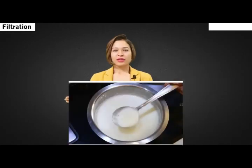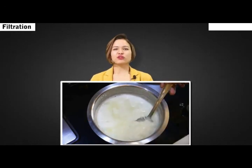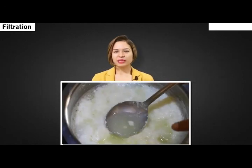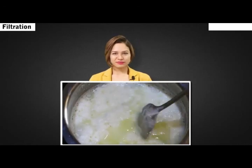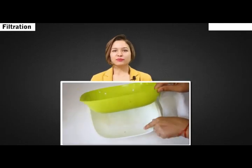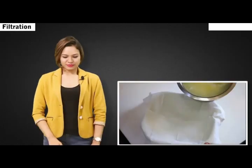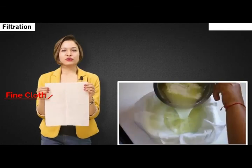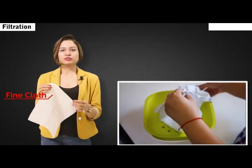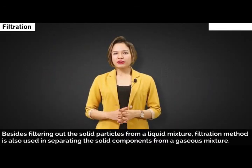The process of filtration is also used for preparing cottage cheese or paneer at home. We add lemon juice to boiling milk, which gives us a mixture of solid particles of paneer and a light yellowish-green liquid. The solid particles of paneer are then separated by filtering the mixture through a fine cloth or a strainer. Here, the fine cloth is used as a filter medium to separate the solid components from the liquid mixture.